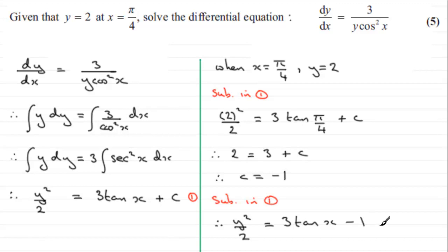If we do that, we have y squared over 2 equals 3 tan x minus 1. I didn't say solve the differential equation making it in the form y equals, so you can leave it like this. You don't have to rearrange. They're quite happy to accept your solution at this level here.